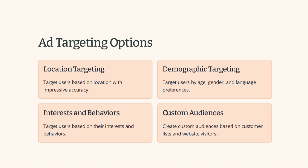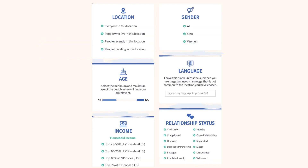We can also set custom audiences based on customer lists and website visitors — we'll create another video on that. All of these layers can be combined: location, gender, age, language, income, relationship status, job titles, hobbies, and other pages they might like are all things we can target in our ads.